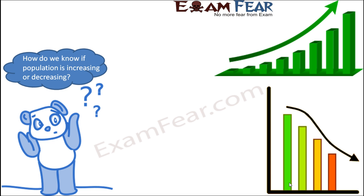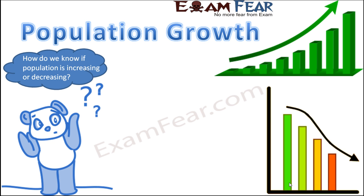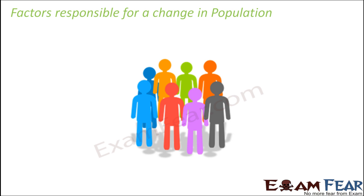Now the question is: how do we know if the population is increasing or decreasing? What are those factors which tell us what is happening to the population? That is where we talk about population growth. When I say population is increasing, I mean that as time passes by, the number of individuals are increasing. Similarly, when I say the population is decreasing, I mean that the number of individuals are reducing with time. Whenever we talk about an increase or decrease in population, there are a couple of factors which play a very critical role.